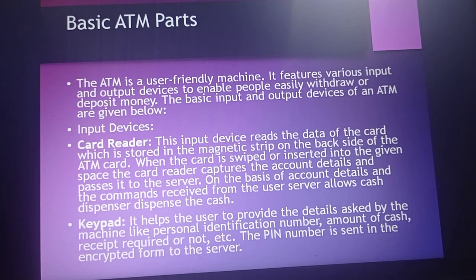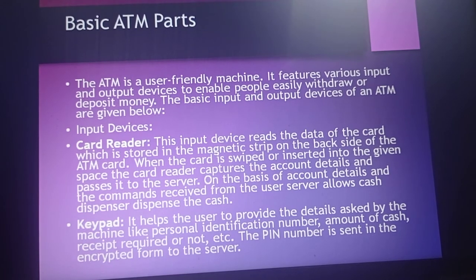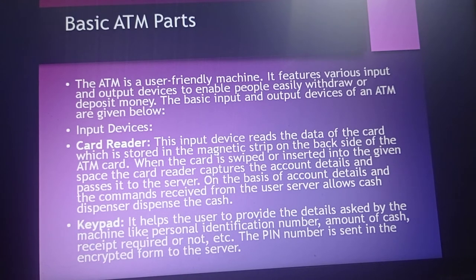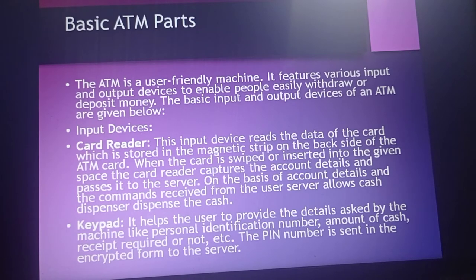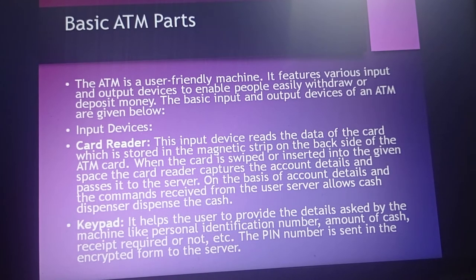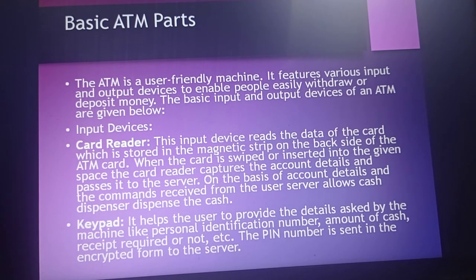The card reader input device reads the data stored in the magnetic strip on the back side of the ATM card — we call it a magnetic strip. When the card is swiped or inserted into the card reader slot, it captures the account details and passes them to the server. Based on the account details and the command received from the user, the server allows the cash dispenser to dispense the cash.